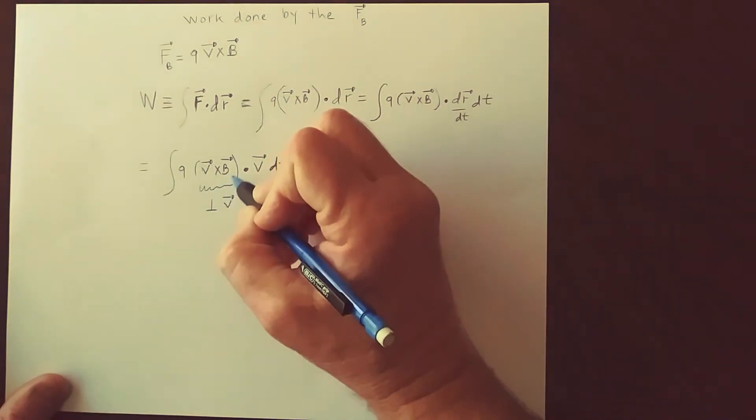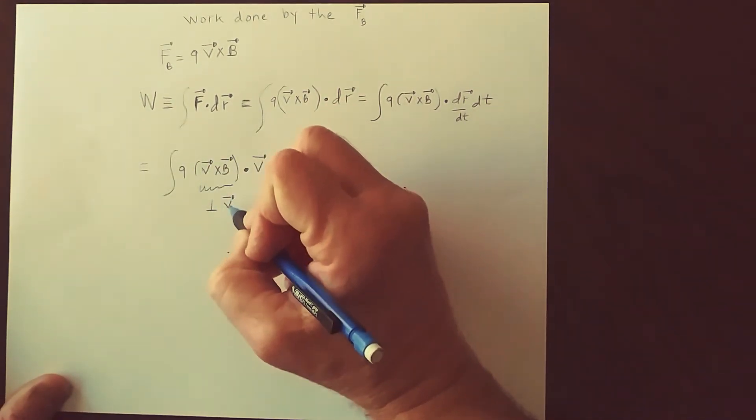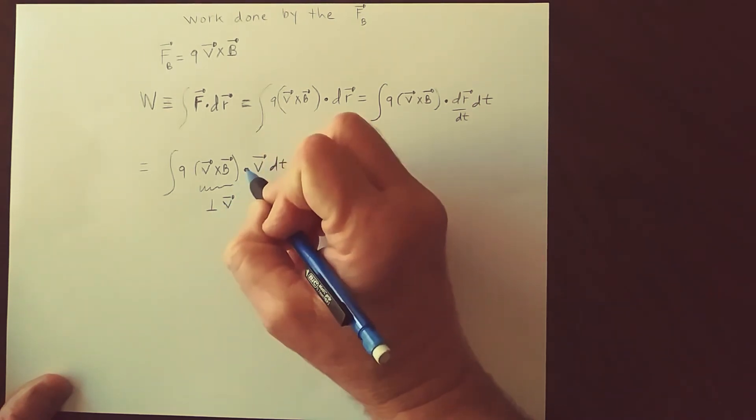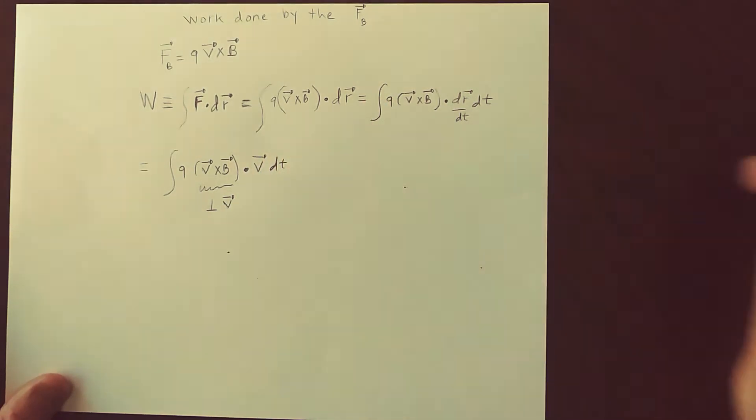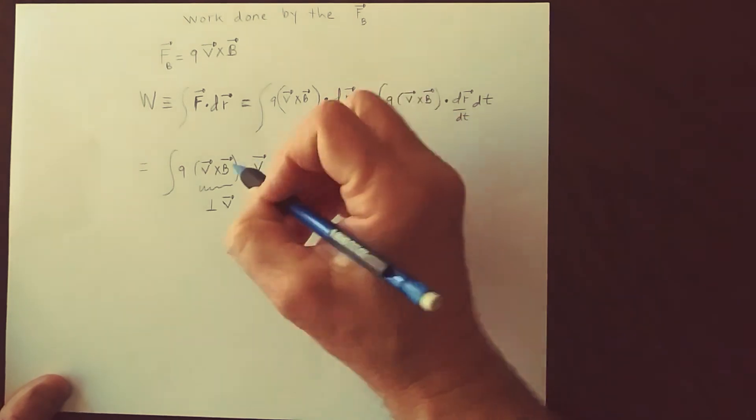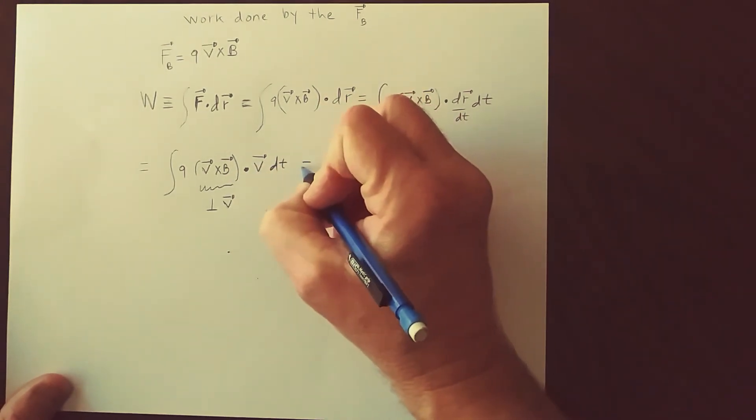So if we get a vector that's perpendicular to the velocity, and then we dot that into the velocity itself, we have a dot product between two vectors that are perpendicular to each other, and therefore that dot product is zero at every point.